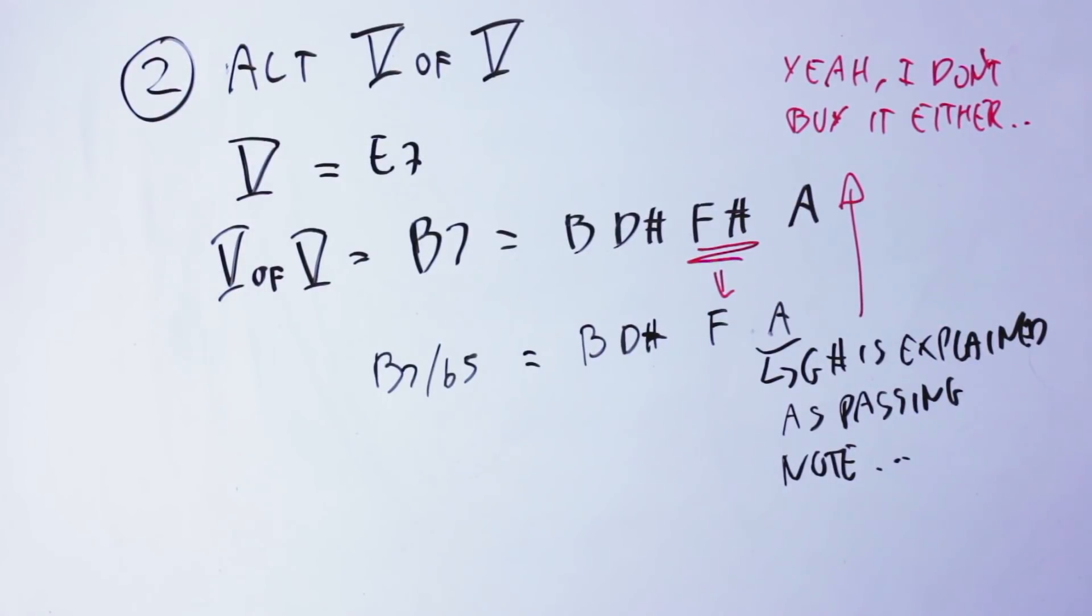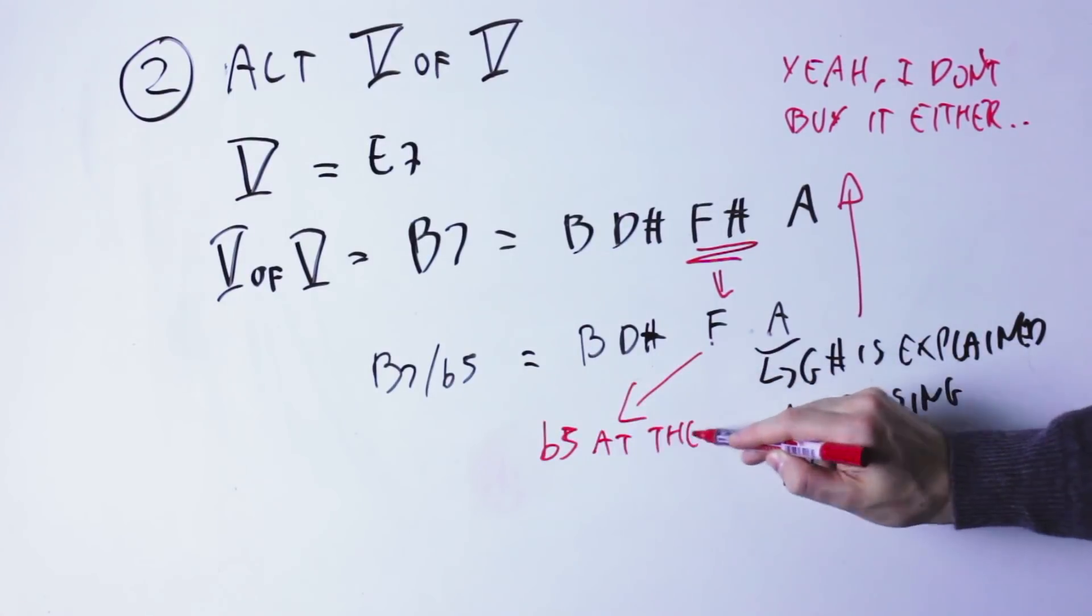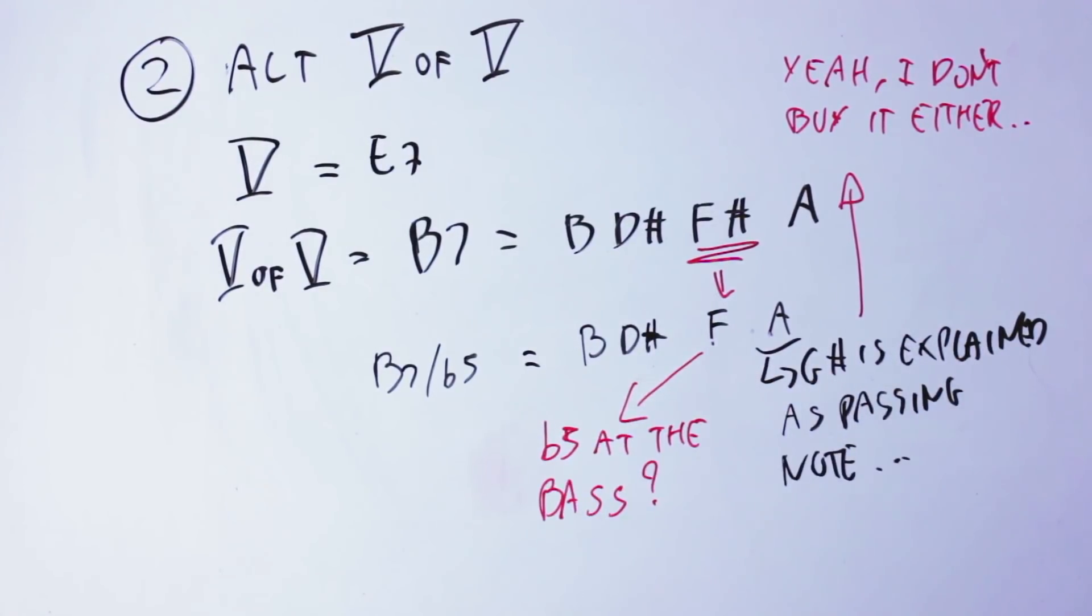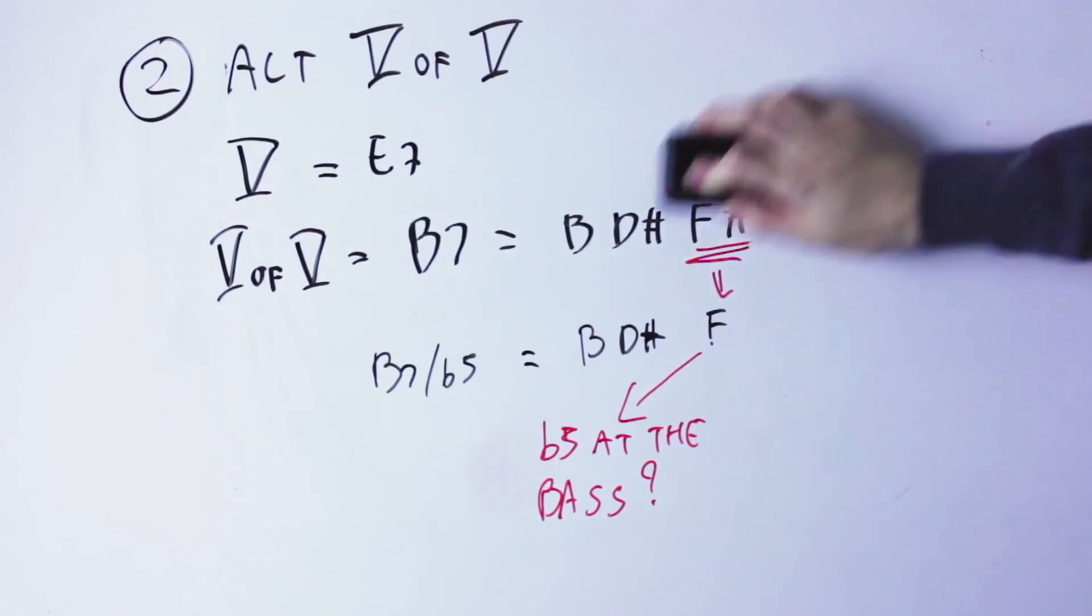The only objection I have to this explanation is that in this case, the root note of the chord would be B, and the note at the base would be the flat 5 of the chord. It's a bit uncommon, at the very least, to use an altered fifth of a chord at the base, but hey, why not?